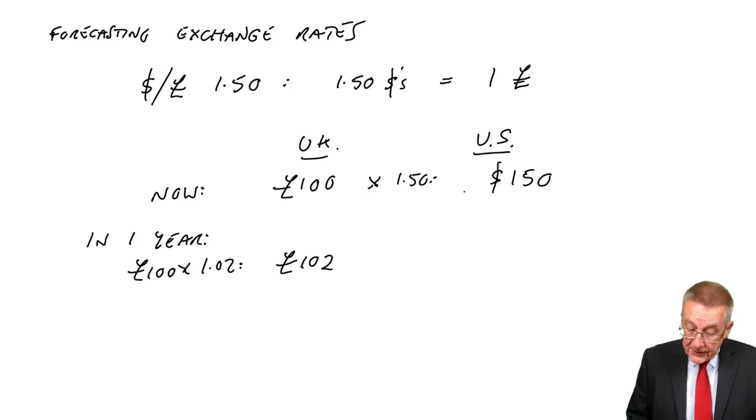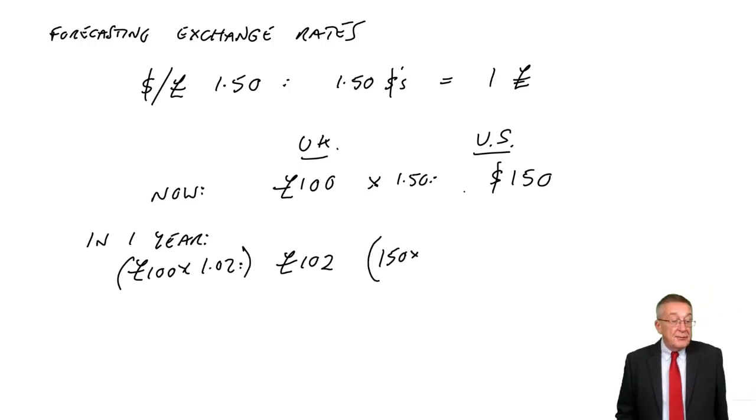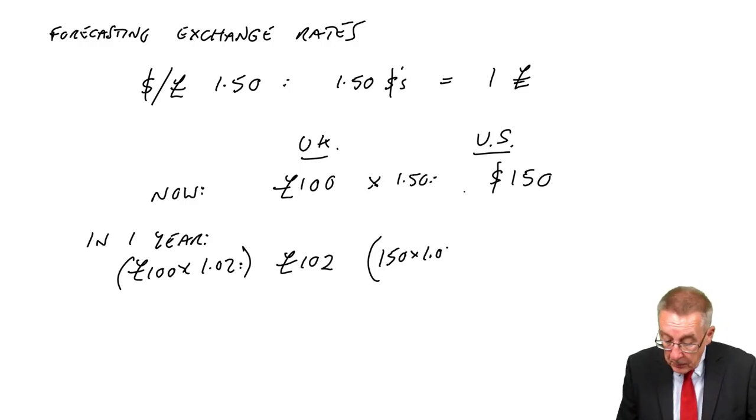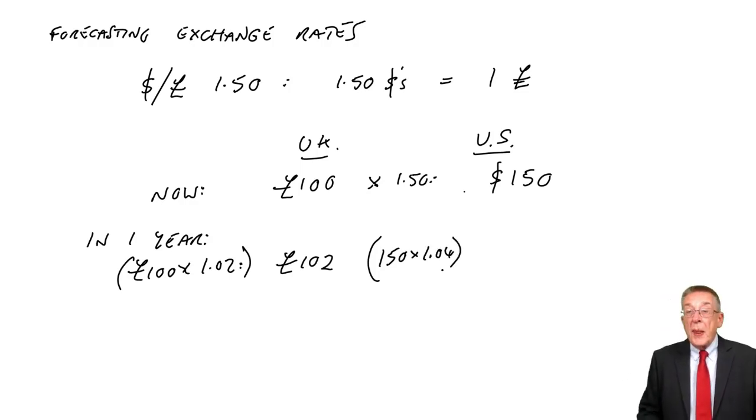What about the US? In the US, it's currently 150 dollars, but inflation in the US is 4%, so it will have gone up by 1.04, and the dollar price we expect to have gone up to 156 dollars.